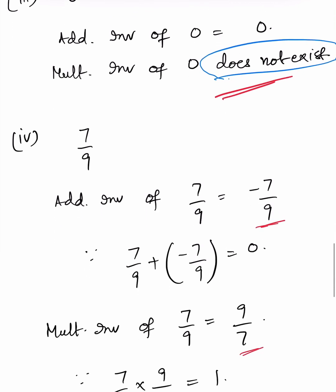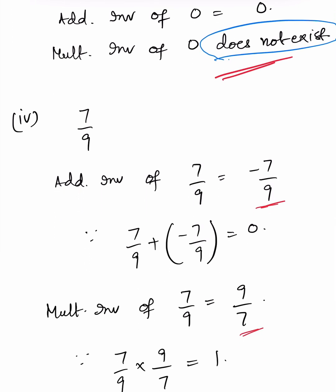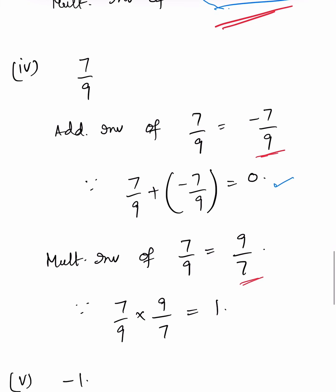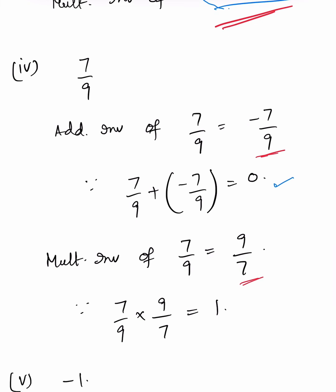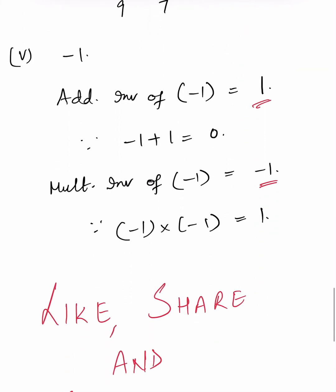For 7/9: the additive inverse is -7/9, because 7/9 + (-7/9) = 0. The multiplicative inverse is 9/7, because 7/9 × 9/7 = 1. For -1: the additive inverse is +1, because -1 + 1 = 0. The multiplicative inverse of -1 is -1 itself, because -1 × (-1) = 1. If you like my video, like, share and subscribe.